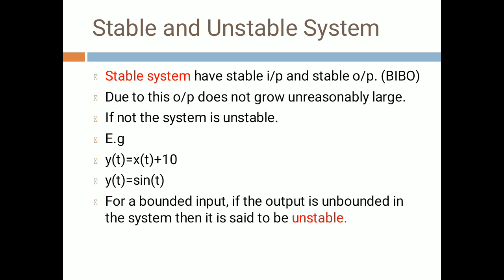Because the stable system has bounded input and bounded output, we can predict the output, and the output does not grow unreasonably large. If the system is unstable — for example, y(t) = x(t) + 10 or y(t) = sin(t) — then for a bounded input, if the output is unbounded, the system is called an unstable system.